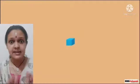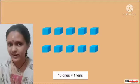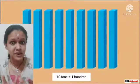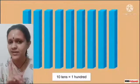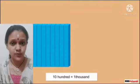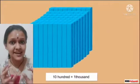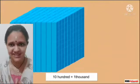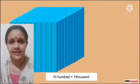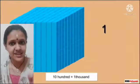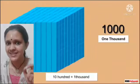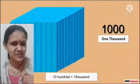As ten ones make one ten, ten tens make one hundred. So ten hundreds make one thousand. It is a new number! It is written as one followed by three zeros, and it is read as one thousand.